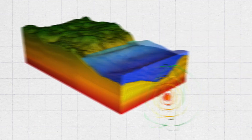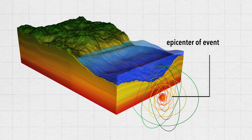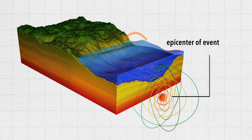When an underground event happens, either an explosion or a large earthquake, it can pump the atmosphere and create an acoustic signal. You can cleverly integrate those signals and still get a very good location of the event.